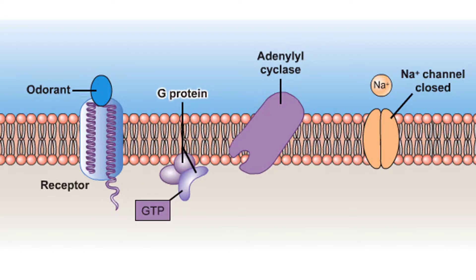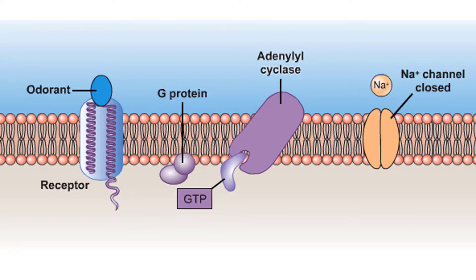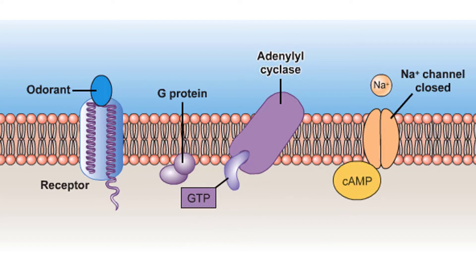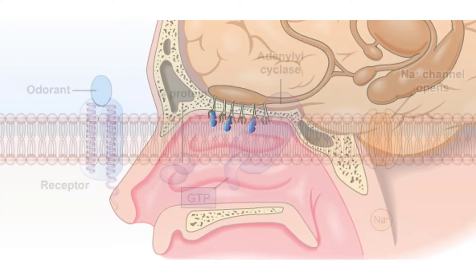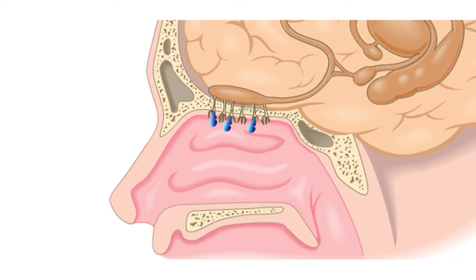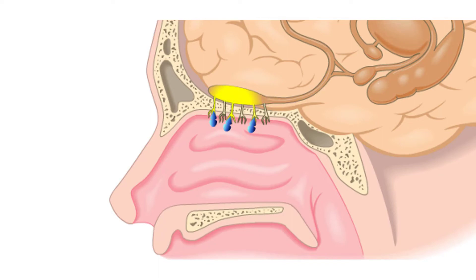G-proteins are the secondary messengers. This then stimulates the enzyme adenylyl cyclase to produce cyclic AMP from ATP. Cyclic AMP opens channels in the plasma membrane that are permeable to the cations sodium and calcium. The flow of cations into the receptor causes depolarization and initiates an action potential along the olfactory nerve. Thus, a chemical signal is transferred into an electrical impulse that travels along the olfactory nerve, sending information to the brain.